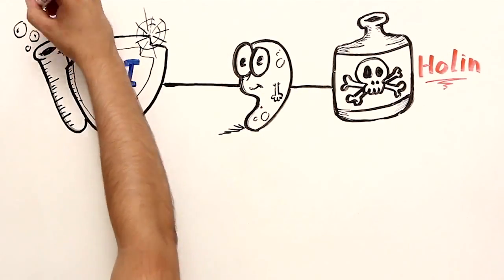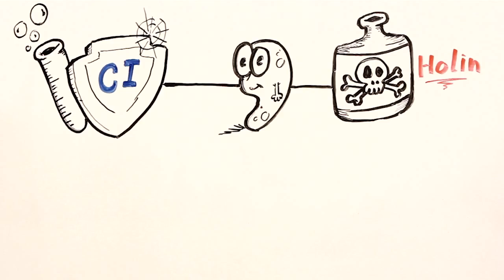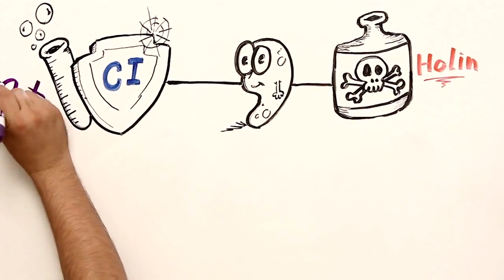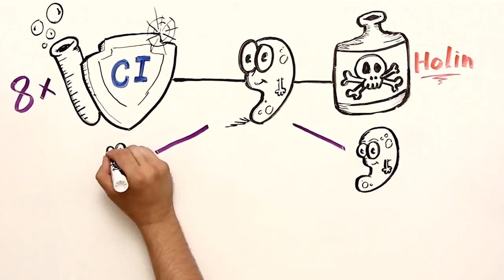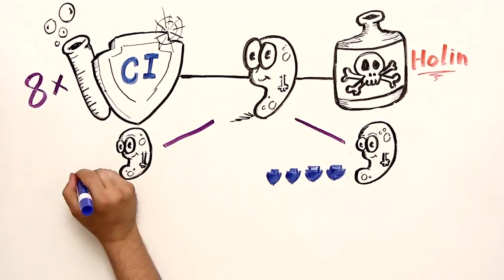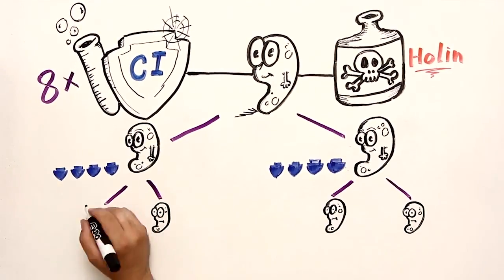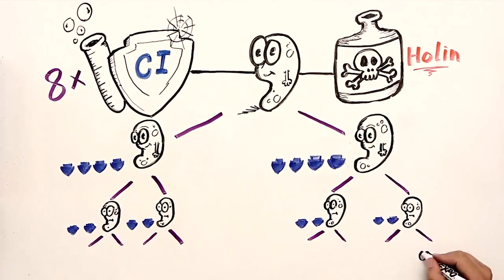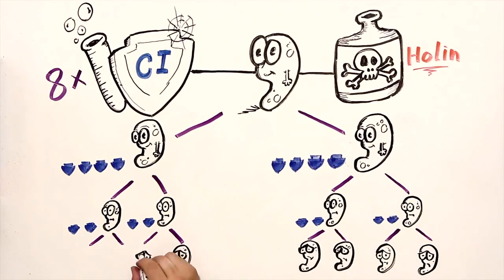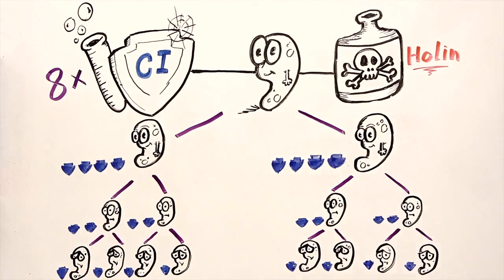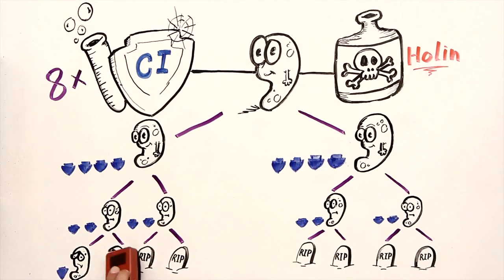As long as there is enough protein, the bacteria is safe from the poison. So let's say Mr. Bacteria leaves the lab all stocked up on good protein. As he reproduces, the new generations are left with less and less protein each. At a certain point, there is not enough protein left to protect them, and the whole population dies and dissolves.